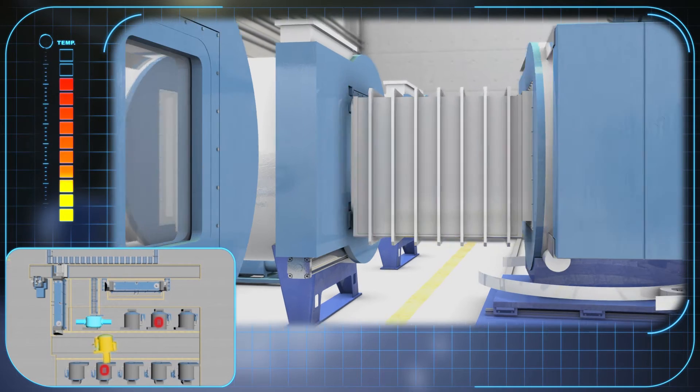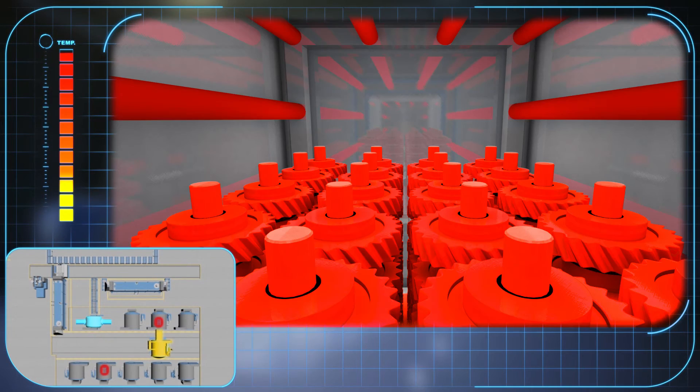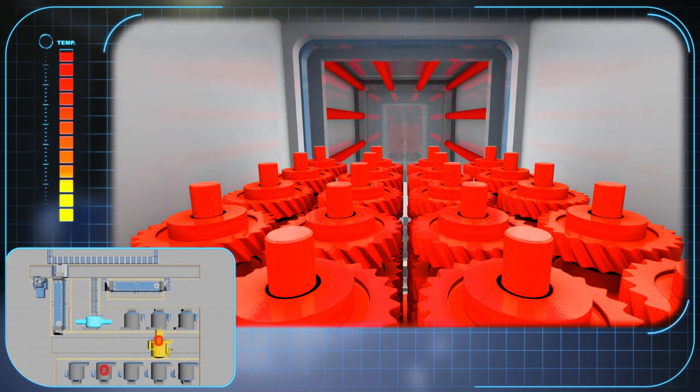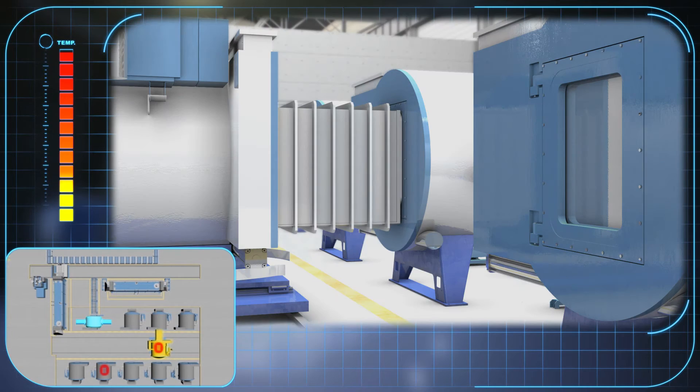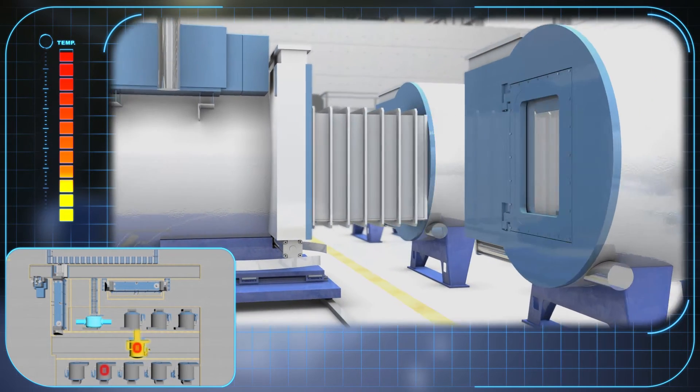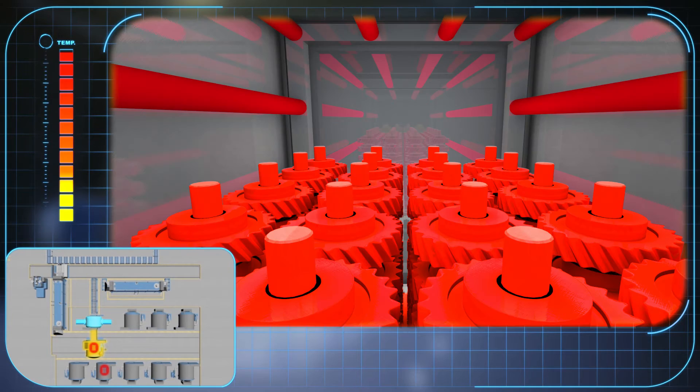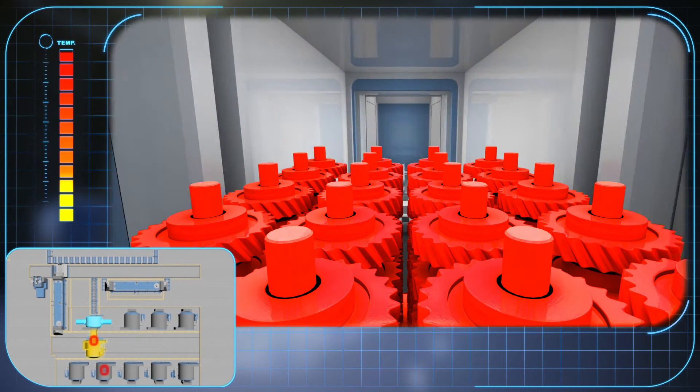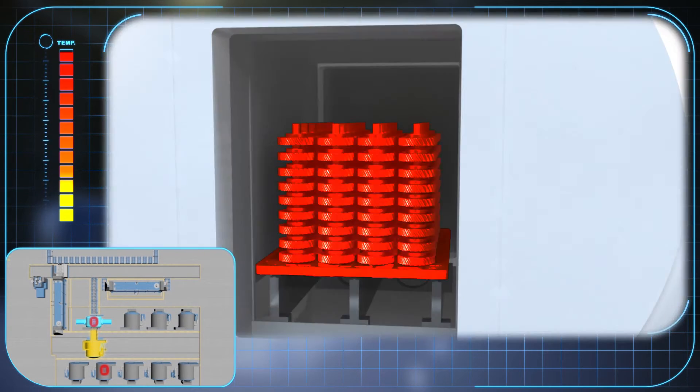In order to prevent oxidation or decarburization of the components, the load is transported under vacuum in the moving, rotating, heating chamber. Minimal temperature loss is guaranteed when transporting charges between the carburization module and the high pressure gas quenching module.